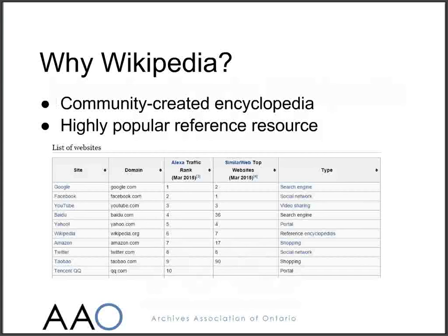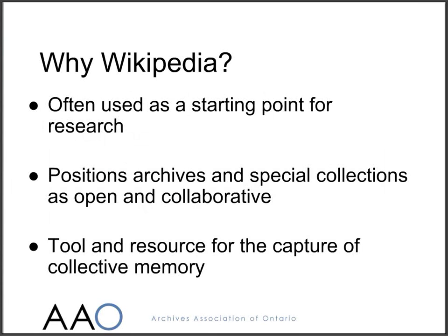Why is Wikipedia so significant? As you're probably aware, it's an online encyclopedia which can be edited by anyone. This table shows the most viewed websites across the internet, and Wikipedia is consistently in the top ten, alongside Google, Facebook and Amazon. As a consequence, Wikipedia articles rank highly in search results, which means that they're often the starting point for further research into a particular topic.